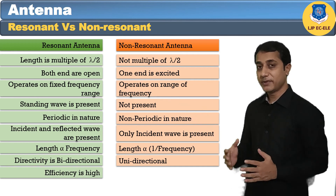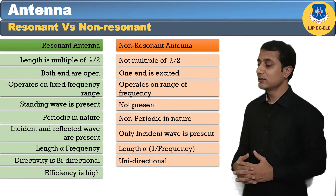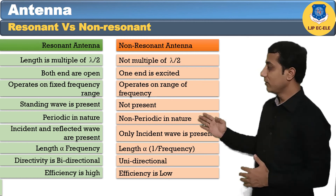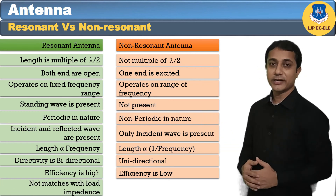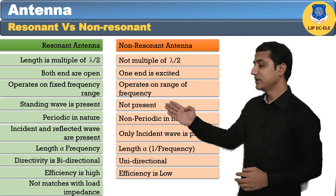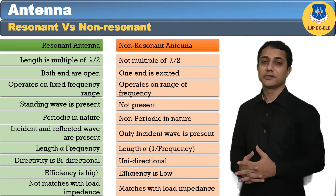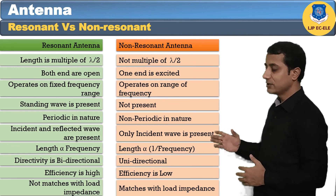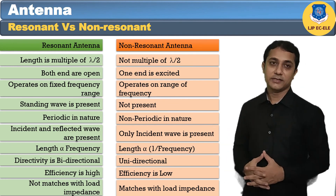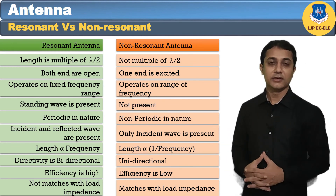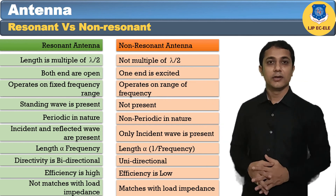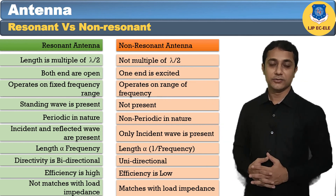Regarding efficiency: resonant antenna efficiency is high, while non-resonant antenna efficiency is low. Regarding impedance matching: the resonant antenna does not match well with the load impedance, whereas the non-resonant antenna matches well with the load impedance. This completes the comparison of resonant and non-resonant antennas.